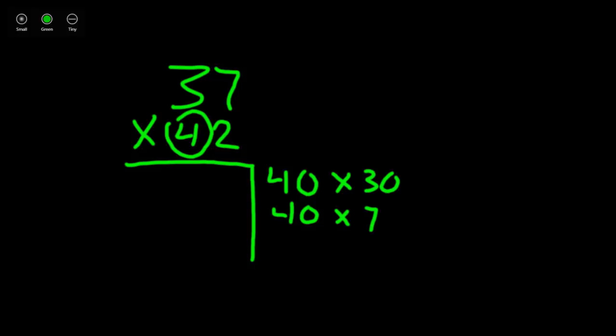Now, we've multiplied our 4 or 40 by each digit on the top. Now, let's move to our 2, the number in our 1's place. That 2, the value of that 2 is simply 2 because it's in the 1's place. Again, we're going to multiply that 2 by each digit on the top. Let's start with the 3 that has the value of 30, 2 times 30. Next, we'll multiply it by the number in our 1's place, 2 times 7 because the value of that 7 is simply just 7.